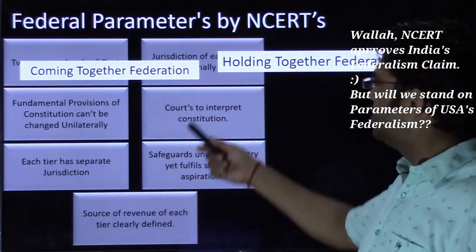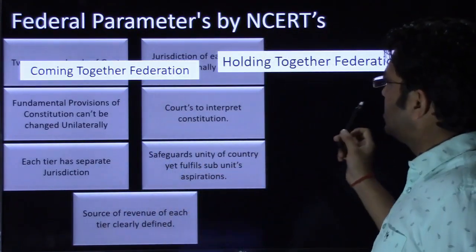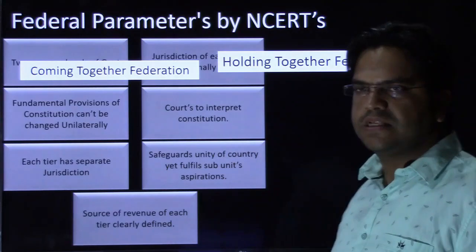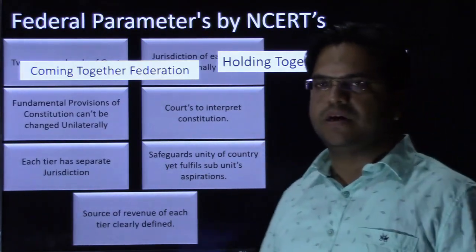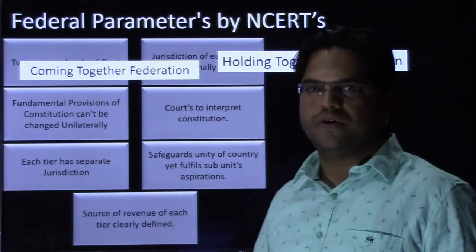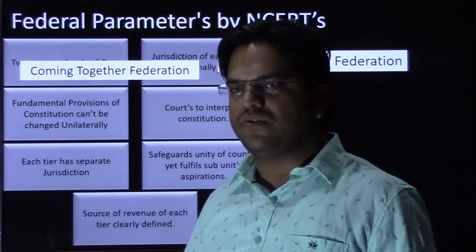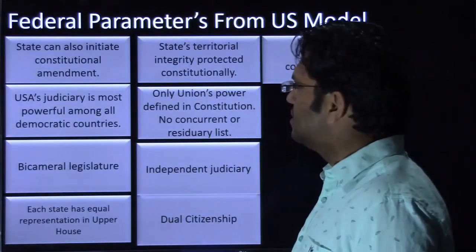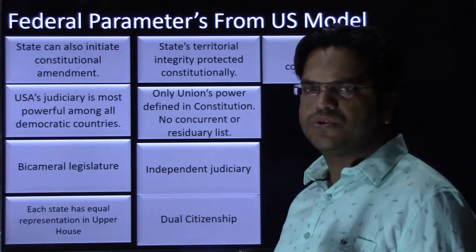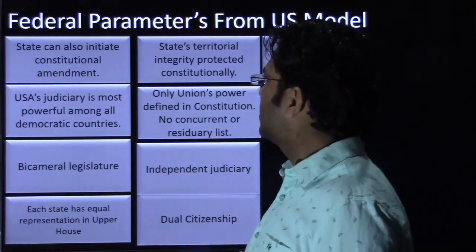There are also two terminologies in NCRT — 'coming together federation' and 'holding together federation' — but we will keep those for a later stage to avoid disrupting the flow. Now we will compare ourselves with the United States model of federalism to see how we fare against those parameters.